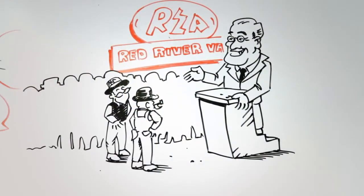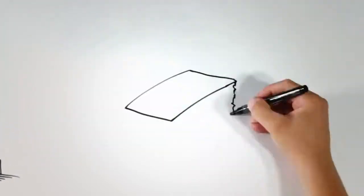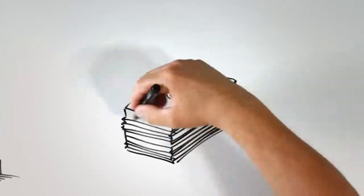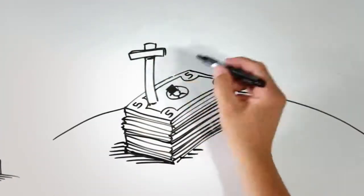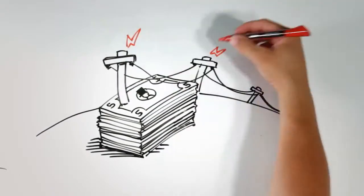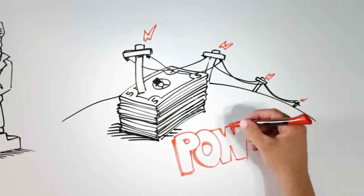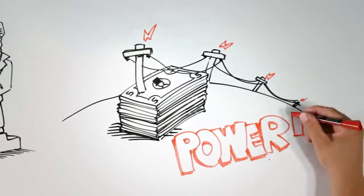And they did. Rural men and women quickly began scraping together the five dollars needed for membership and equity in the co-op. Up went the poles and wire and lines to bring rural folks what they so desperately needed: power.